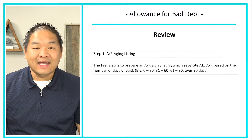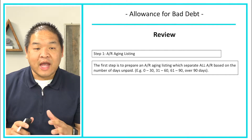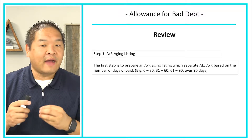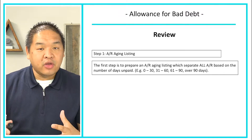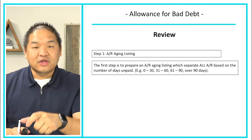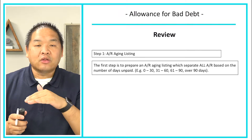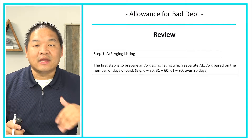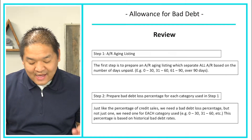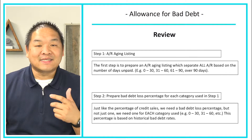The first step is we're going to need an AR aging listing. Sometimes it's given to you; other times we actually have to put it together. We're going to put it together because that's the worst case scenario. Typically we have spaces of zero to 30, 31 to 60, 61 to 90, and 90 plus, as far as how long that debt has been outstanding from our customers. Then step number two is we're going to prepare a bad debt loss percentage for each of the categories identified in step one.